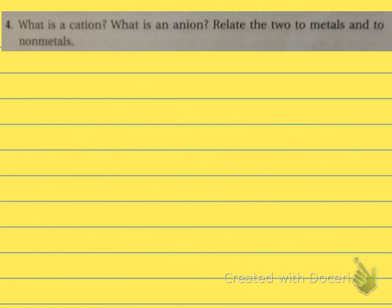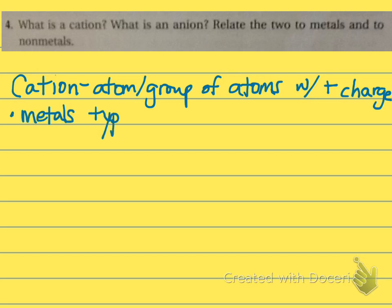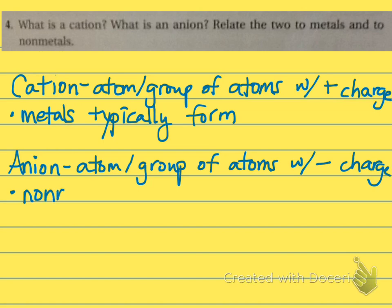Number four: what is a cation, what is an anion, relate the two to metals and non-metals? A cation is an atom or group of atoms with a positive charge. An anion is an atom or group of atoms with a negative charge. Anions are typically non-metals.